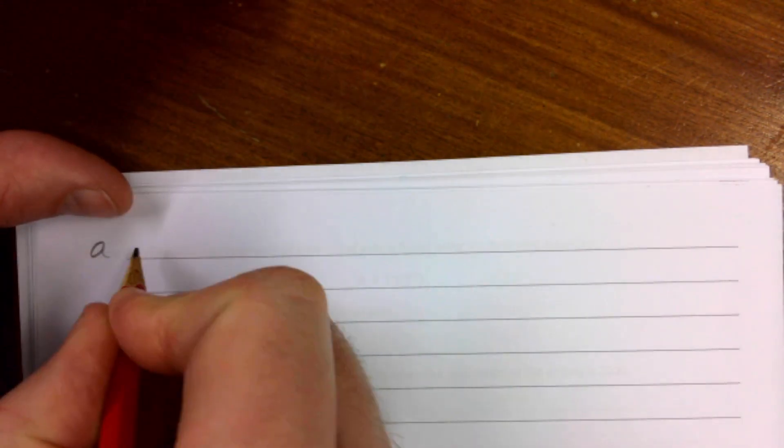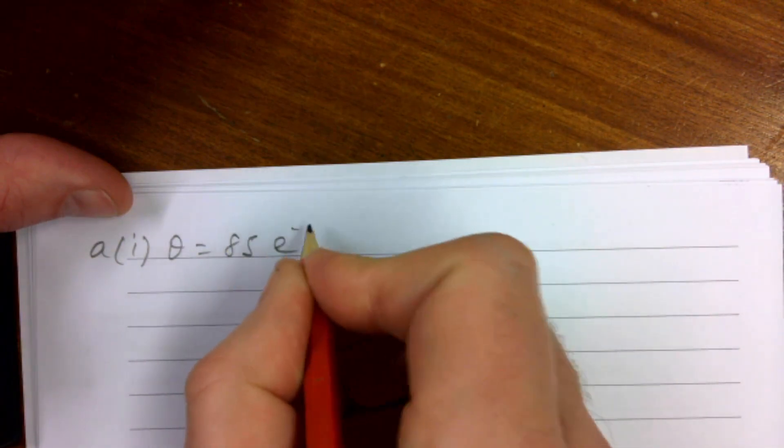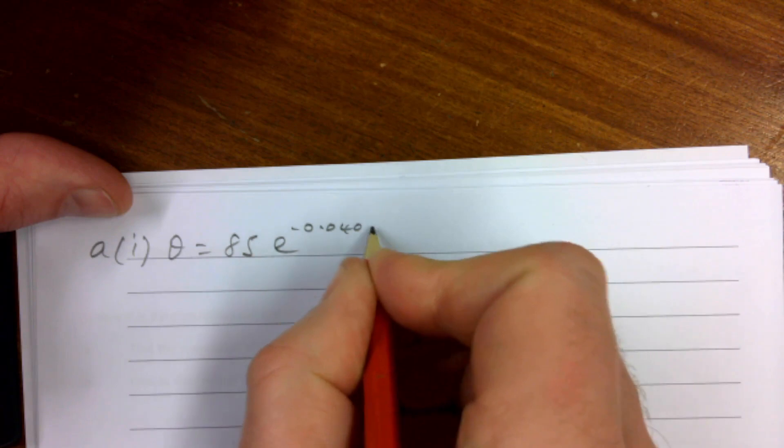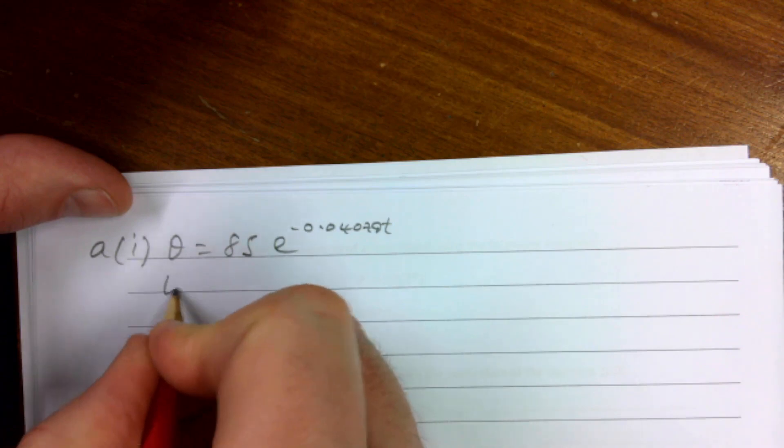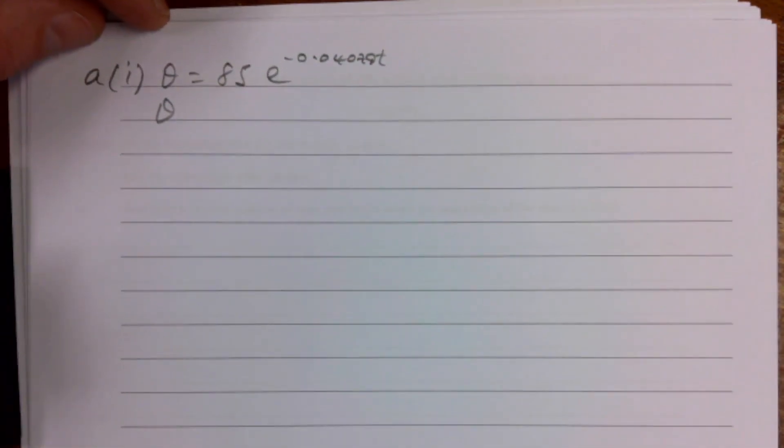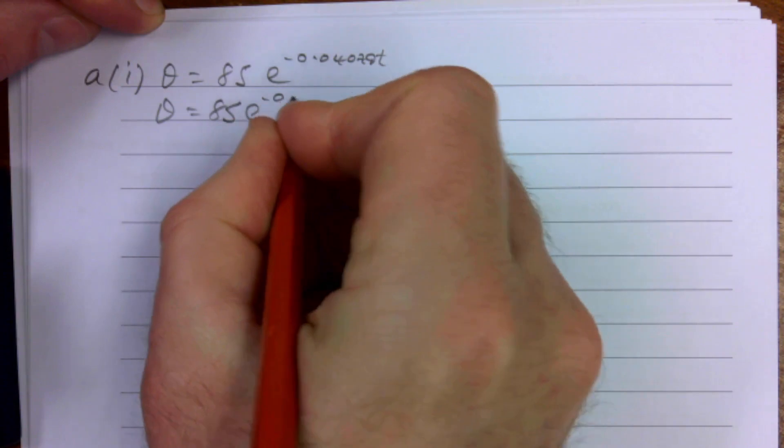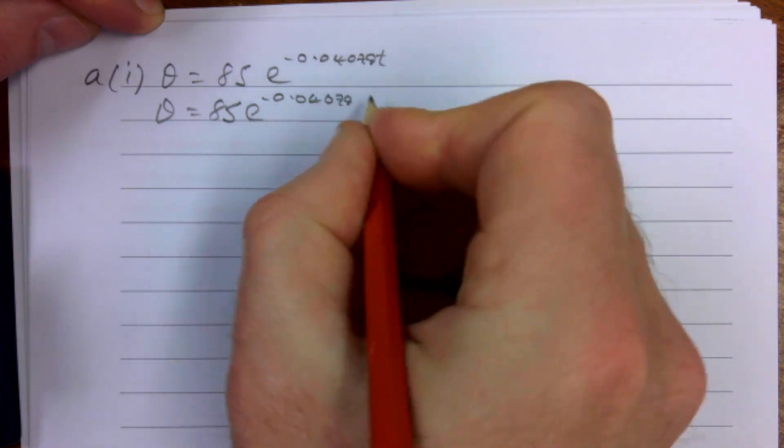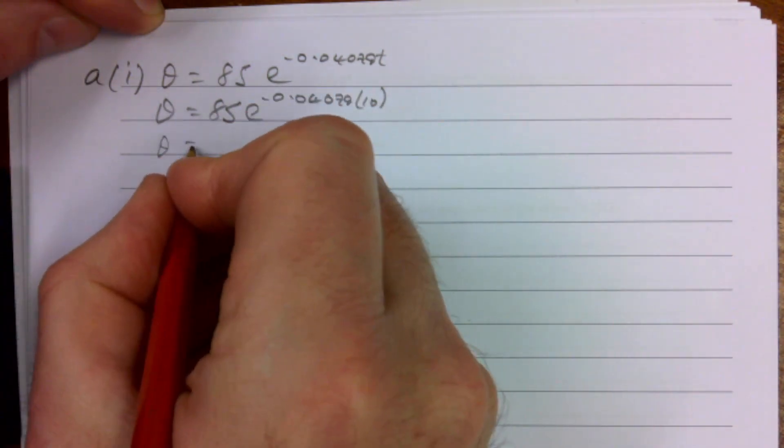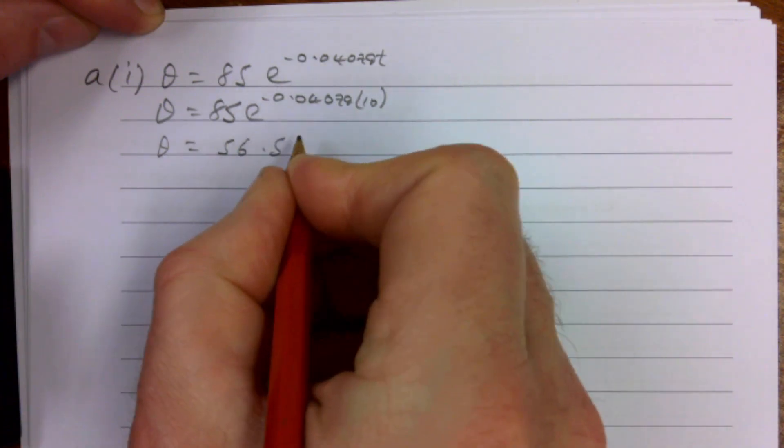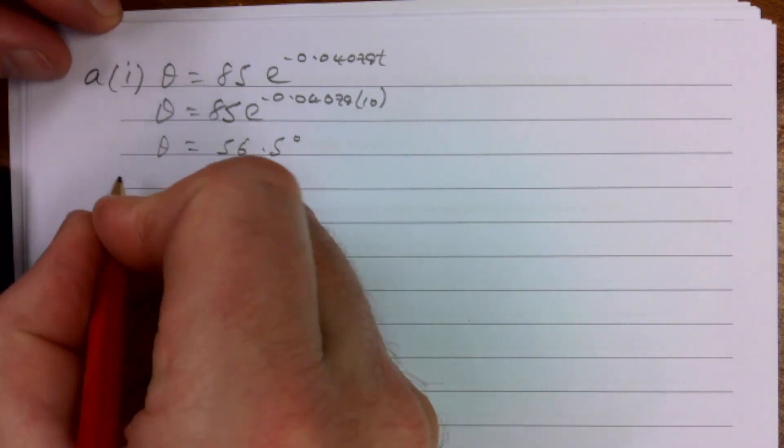So part A(i), θ = 85e^(-0.040790·10). They want it after 10 minutes. Sub that into your calculator and we get θ is 56.5 degrees. Now we need to be careful, this is our excess temperature. So we want to know the temperature of the water.